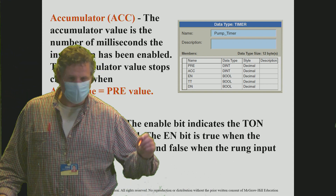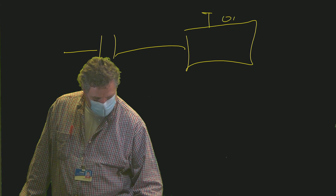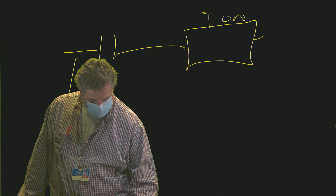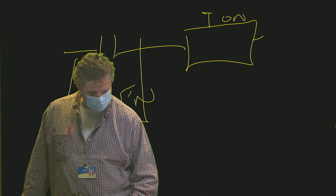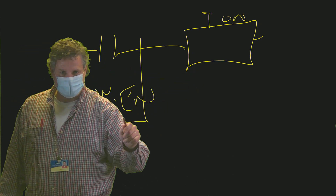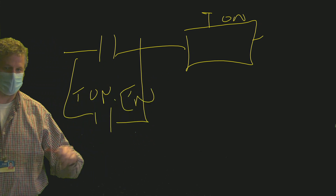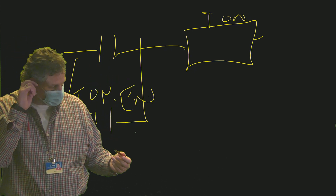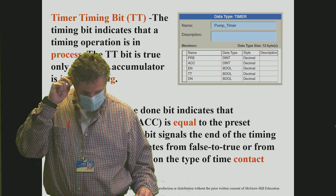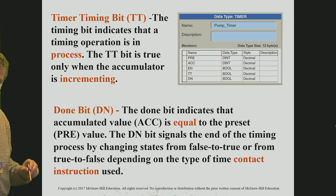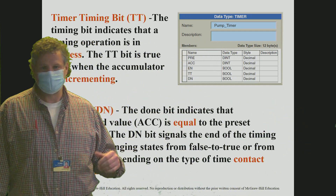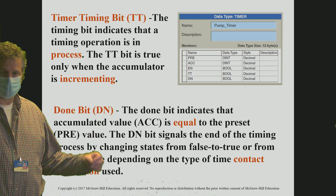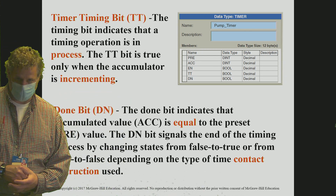The enable bit can be handy for doing a seal-in circuit. You can bring the EN around the input contact — using TON.EN — so as soon as you close that contact, it enables the timer, allowing it to stay on and continue timing. You do not have to hold the button to maintain timing. The timer timing bit (TT) comes on as long as that accumulator value is incrementing — when it's timing, the timer timing bit is on.